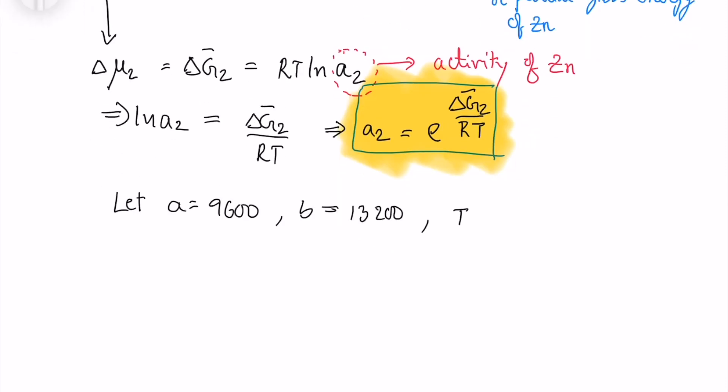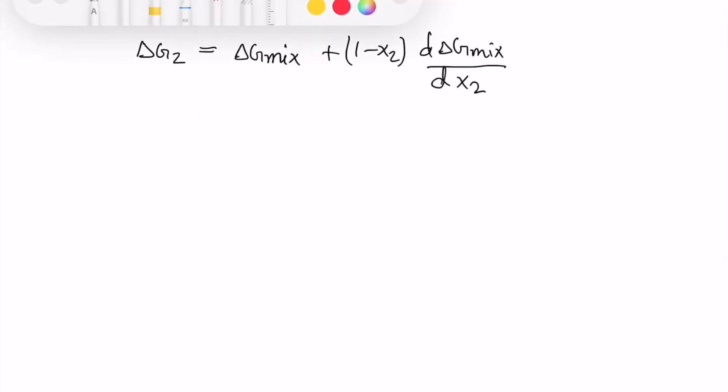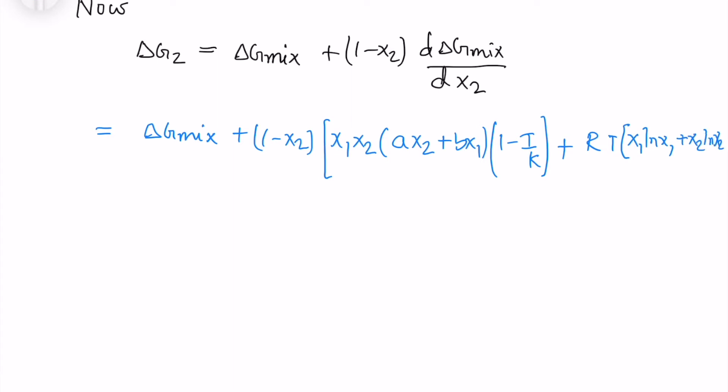So I will take the constants that are given in 8.8 equation as some A, B, K constants. Now I will do the calculation of partial Gibbs free energy of zinc. So I have to do the differential of this part.